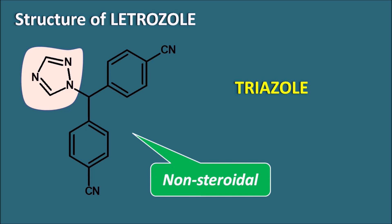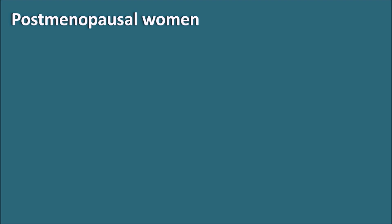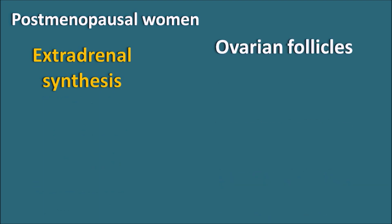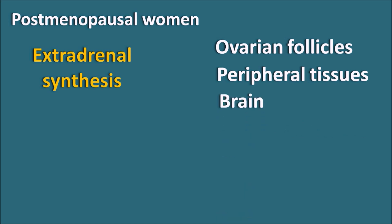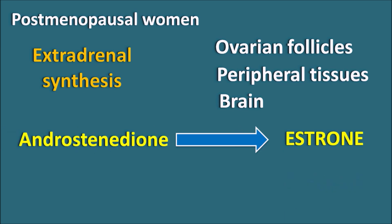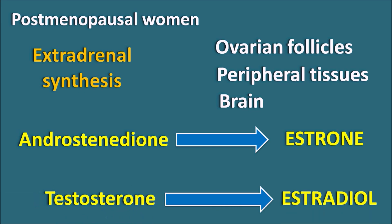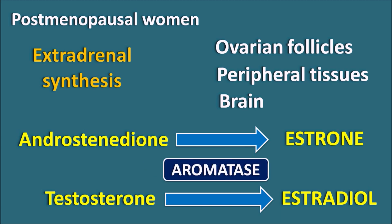Now let us see how Letrozole acts in the postmenopausal woman and to treat infertility in anovulatory women. In postmenopausal women, estrogen is not synthesized within the ovaries, but estrogens can be produced by extra-adrenal synthesis. Within the ovarian follicles, peripheral tissues, and within the brain, estrogen can be derived from androgens. One important intermediate in the androgen pathway is androstenedione. This androstenedione can be converted into estrone, or testosterone can be directly converted into estradiol. Both reactions are mediated by the aromatase enzyme, because estrogens have an aromatic ring.